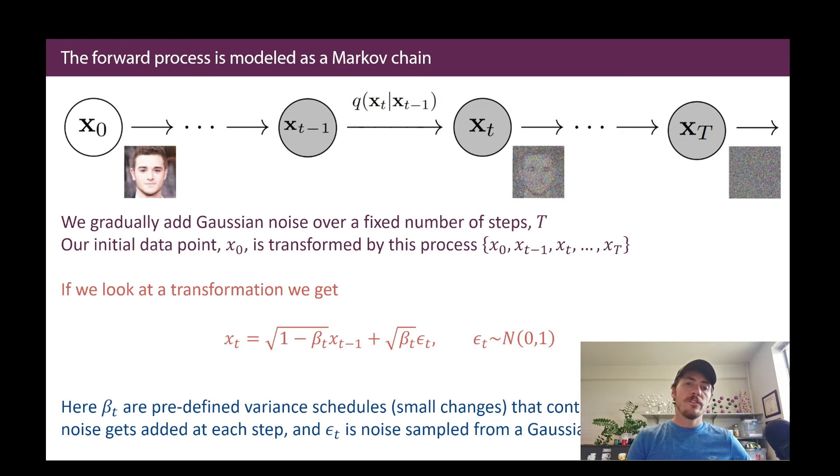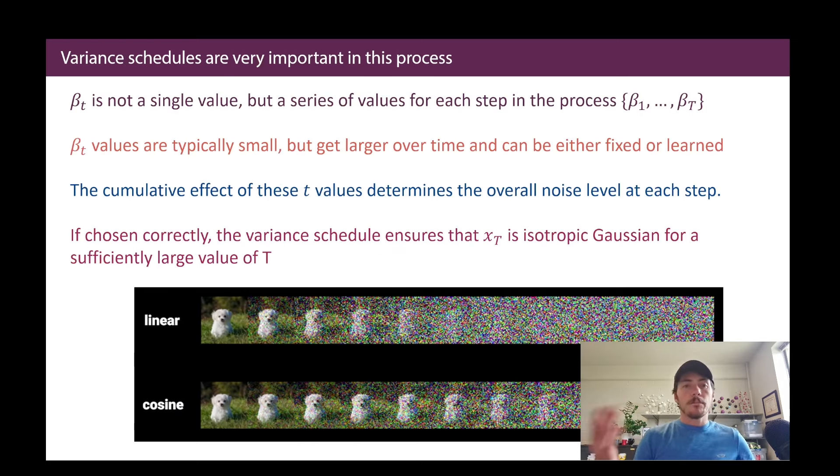So what do we use for this predefined variance schedule? Well, you've got a lot of options. It's certainly very important because it's what dictates how much change happens in your image throughout the process of each one of these steps. It's typically small. You don't want to do dramatic changes. You want to do small changes and let them maybe get larger over time. And the process whereby that happens can be fixed or it could be learned from a neural network. But the idea is that the cumulative effect of adding all these things should be the overall noise at the final step. And if chosen correctly, then this variance schedule should ensure that XT, your final step, you should be left with just an isotropic Gaussian. And this happens at some sufficiently large number of steps T.